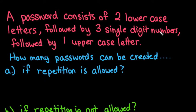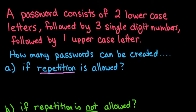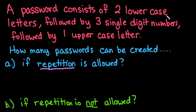We're going to use the fundamental counting principle to help us set this up. For the first case, repetition is allowed, meaning that once I select a lowercase letter I can use it again. So my two lowercase letters could both be M, or my digits can all be five — something like that.